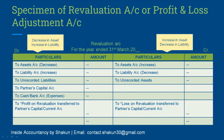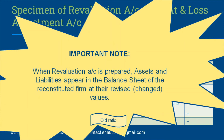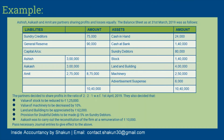On balancing the revaluation account, either profit or loss may appear. Profit is the balancing figure on the debit side when the credit side total is greater. If the debit side total is greater, the balancing figure is a loss. The profit or loss is distributed between the partners in their old ratio, since these revaluations relate to the period before the change in profit sharing ratio. Importantly, whenever the revaluation account is prepared, assets and liabilities appear in the balance sheet of the reconstituted firm at their revised values.